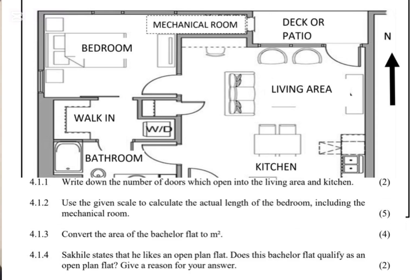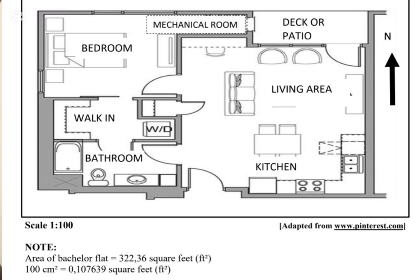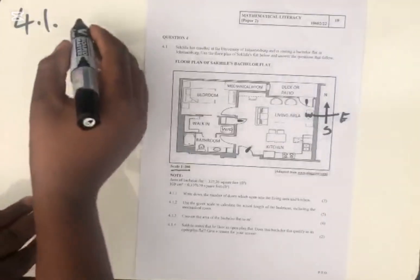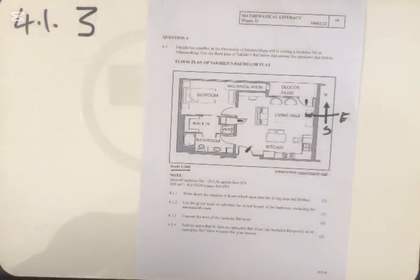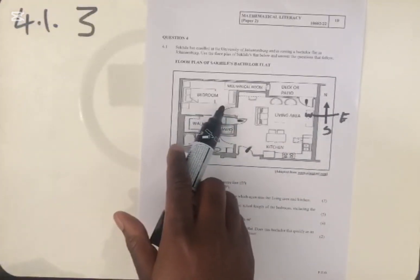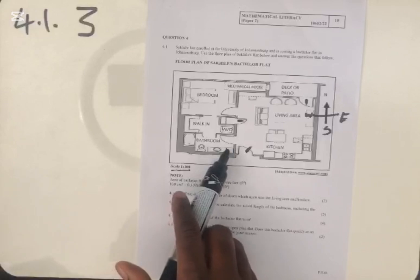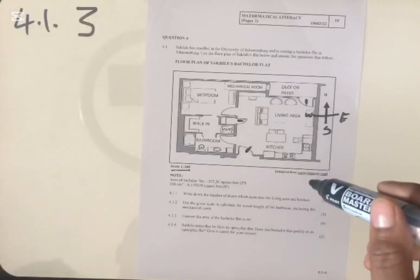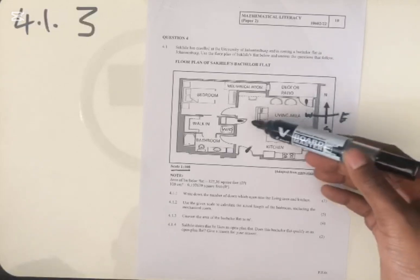The first question: write down the number of doors which open into the living area and the kitchen. Door one opens into the living room; door two opens into the kitchen and the living room; door three also opens into the living room. There is a door in the bathroom, but it does not open into the living room — it opens into the bedroom or bathroom. So the doors that open into the living room and kitchen are doors one, two and three — we have three doors.